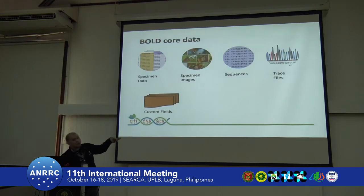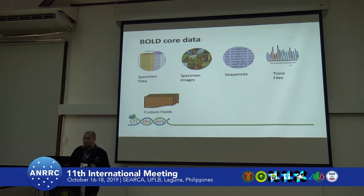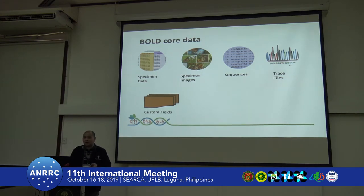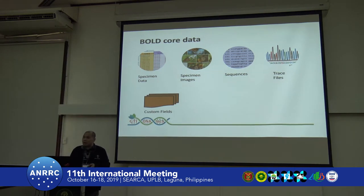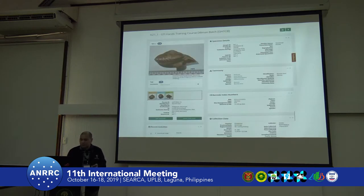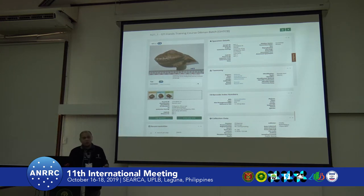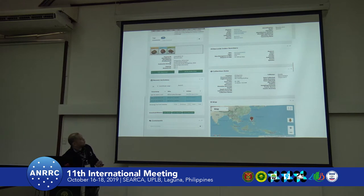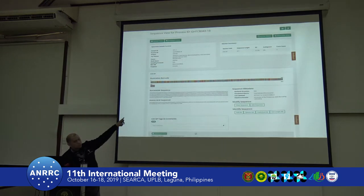All of these must be present in your submissions. The core data will include the specimen data, specimen images for cross-referencing and future evaluation, the actual sequences, and the trace files. Sometimes each client may even provide custom fields to supply further information for every specimen submitted. Here's an example of what we have submitted — a specimen record which includes all the information pertaining to this particular specimen, a map showing where it is located, and the actual barcode.